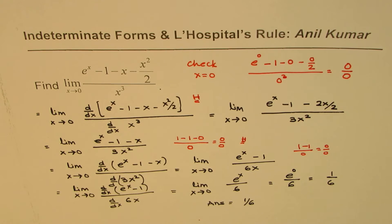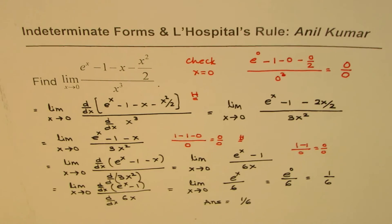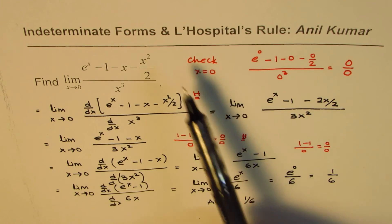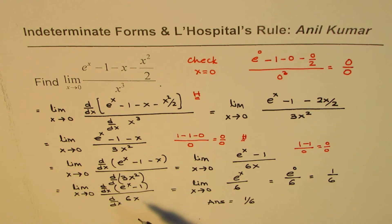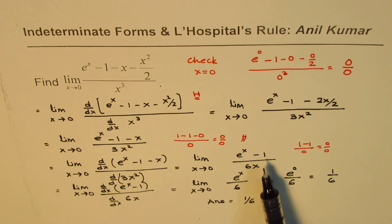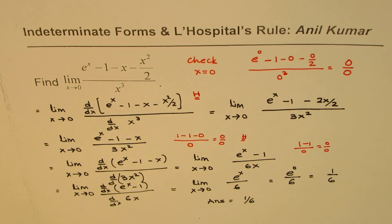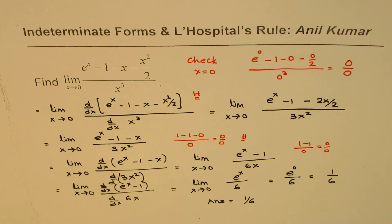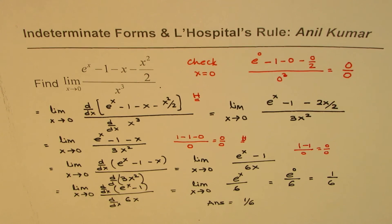So as you have seen in this example, we can apply L'Hospital's rule multiple number of times. But the important aspect is that every time you apply, you should check whether we have an indeterminate form or not. It is important to check, otherwise you can do a mistake. I'm Anil Kumar and I hope that helps. You can always share and subscribe my videos. Thank you and all the best.